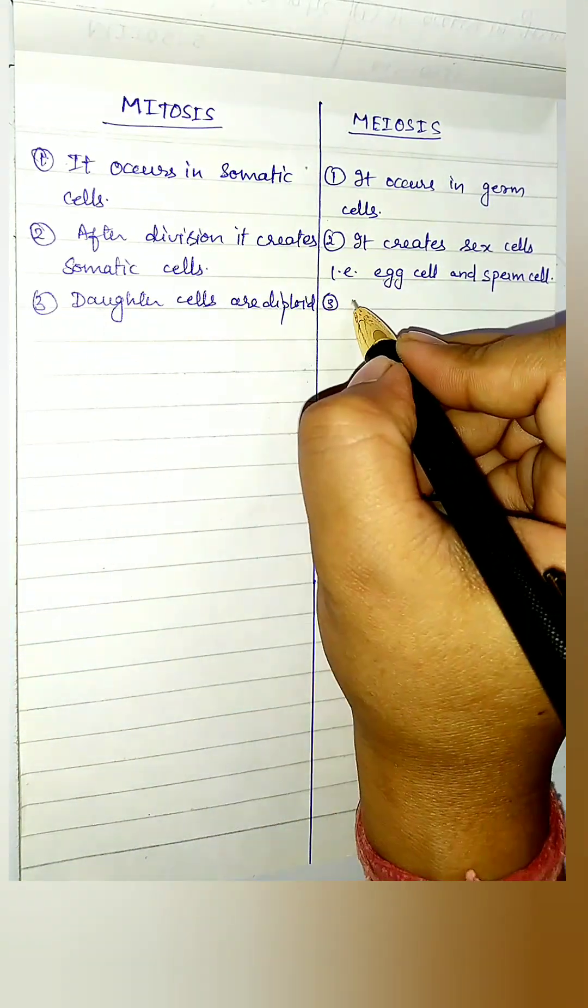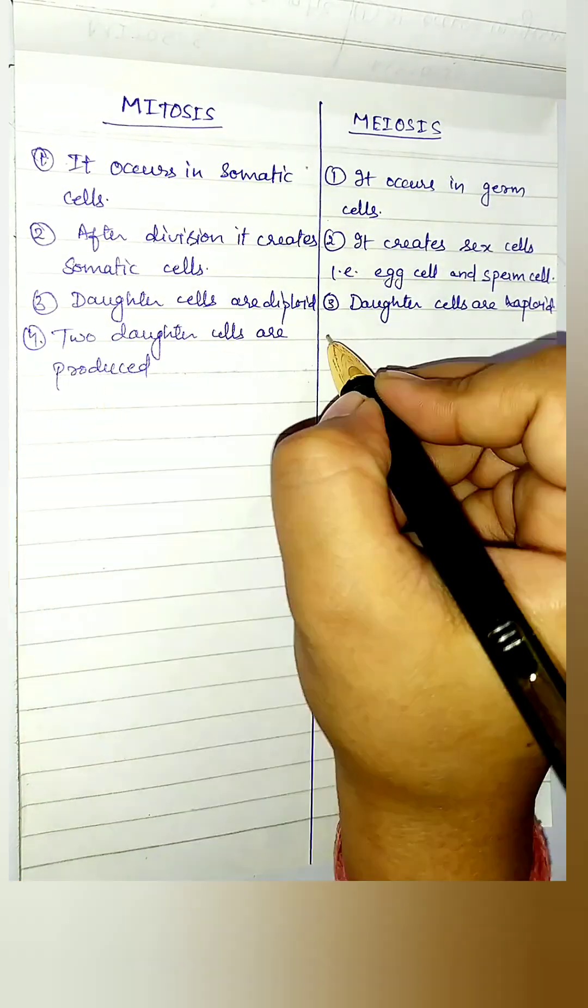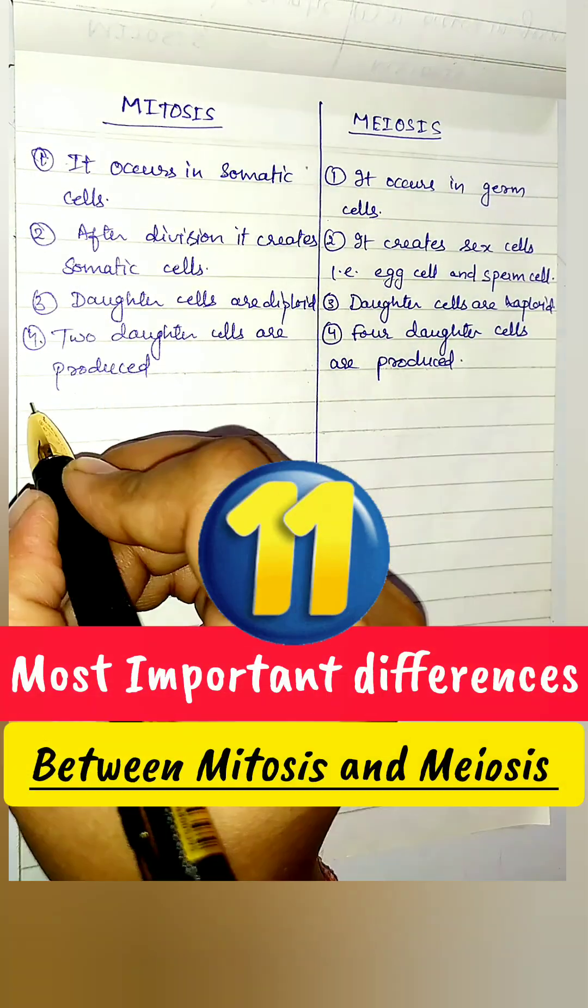Daughter cells which are produced are diploid in mitosis. In meiosis it is haploid. Two daughter cells are produced in mitosis and four daughter cells are produced in meiosis.